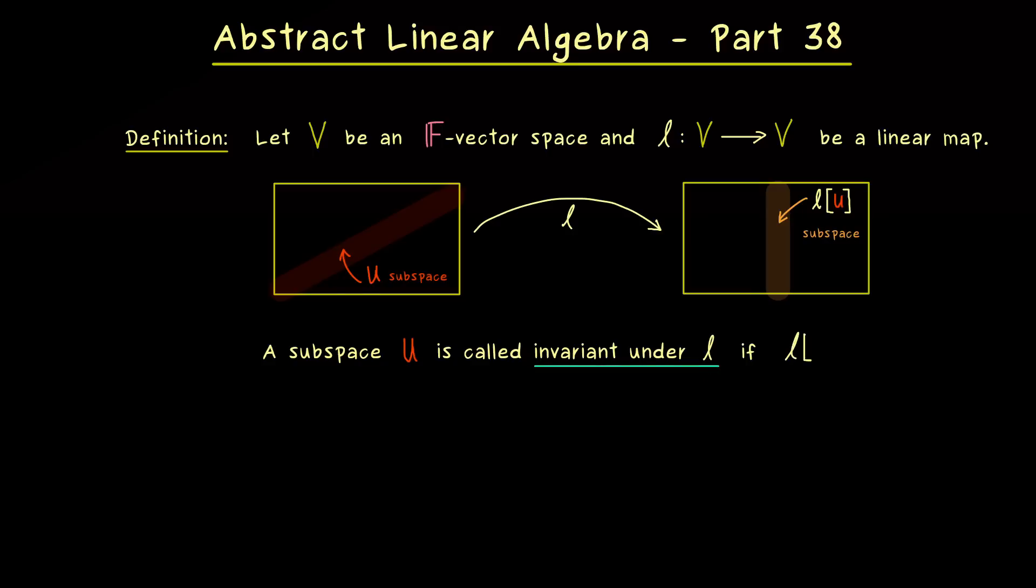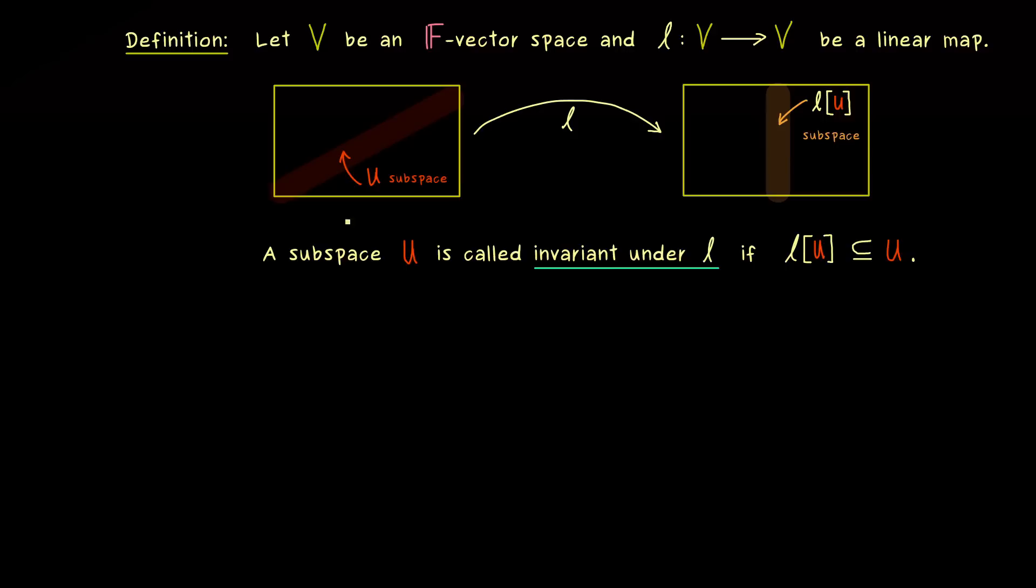More precisely, we should say the subspace is invariant under the linear map L. And the definition is quite simple. The image of U lies completely in U again. So the subspace L of U is either equal to U or a subspace in U. This means such a whole rotation of a subspace like in the picture is not possible for an invariant subspace.